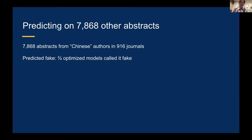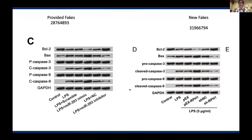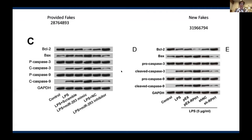If three of our four optimized models agreed that it was fake, we'd say it was a faked abstract. With this method we identified 14 new potentially faked abstracts. We then started diving into what these new fake papers look like, and we found some figures that are completely duplicated among the new fakes and the previously provided fakes. Here you have one example where you can see gels that are identical but from two different papers, and another example of the same thing — identical gels from two different papers.